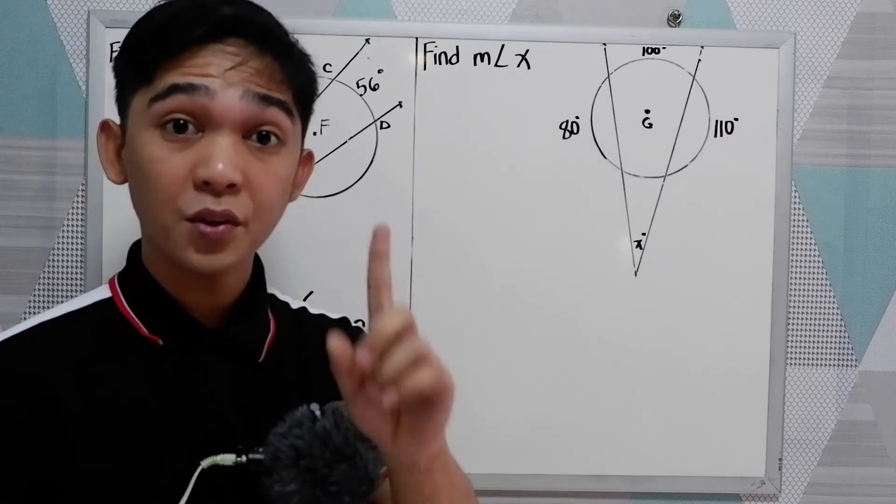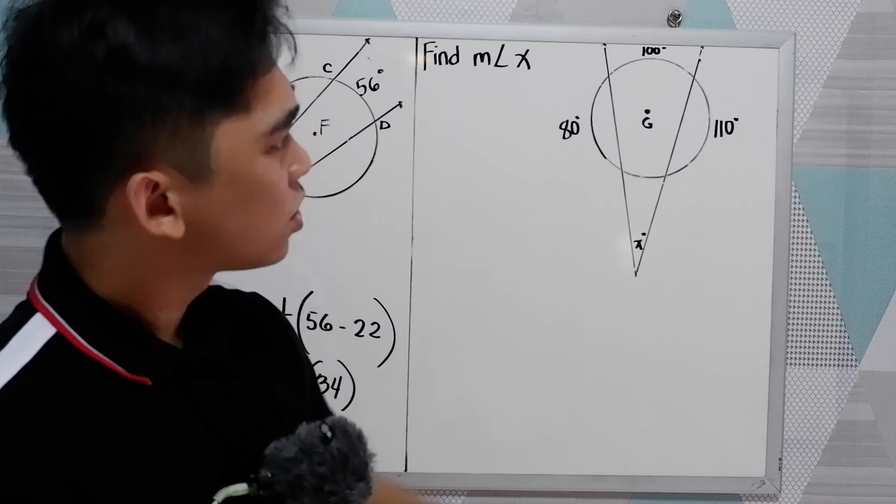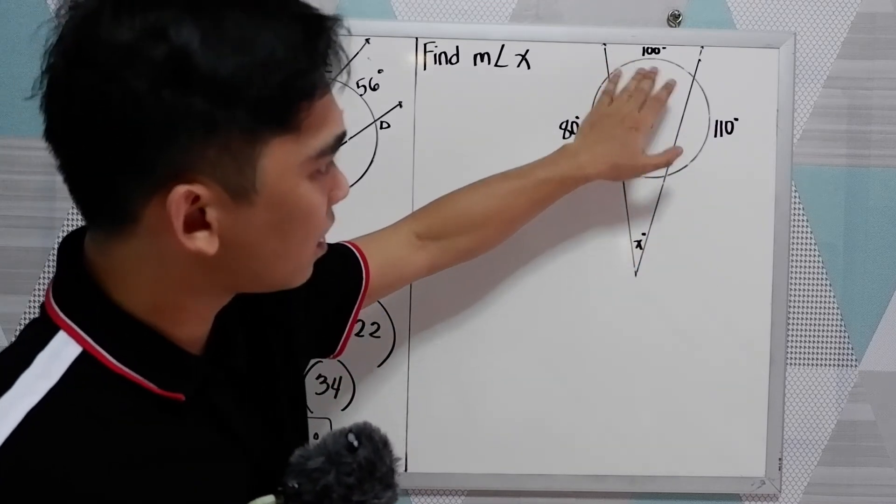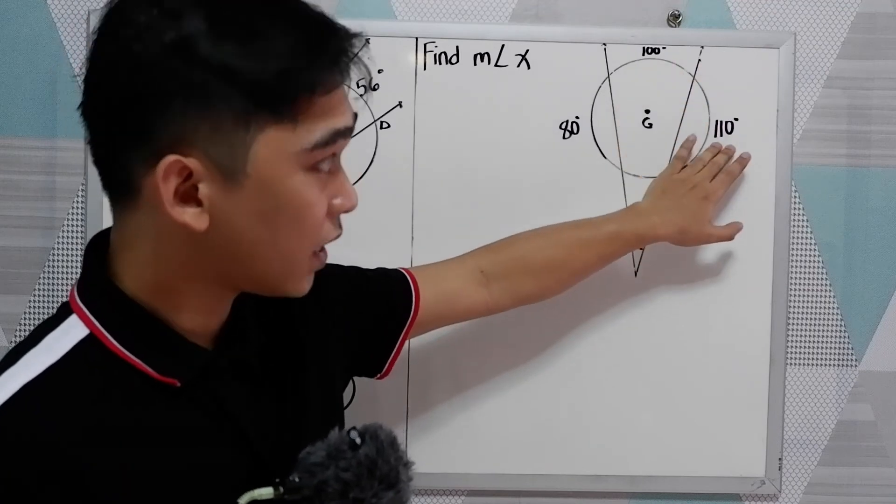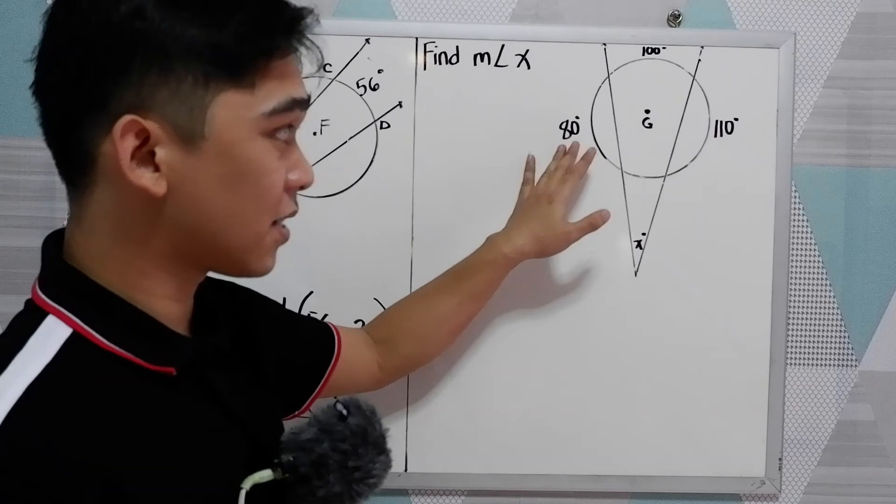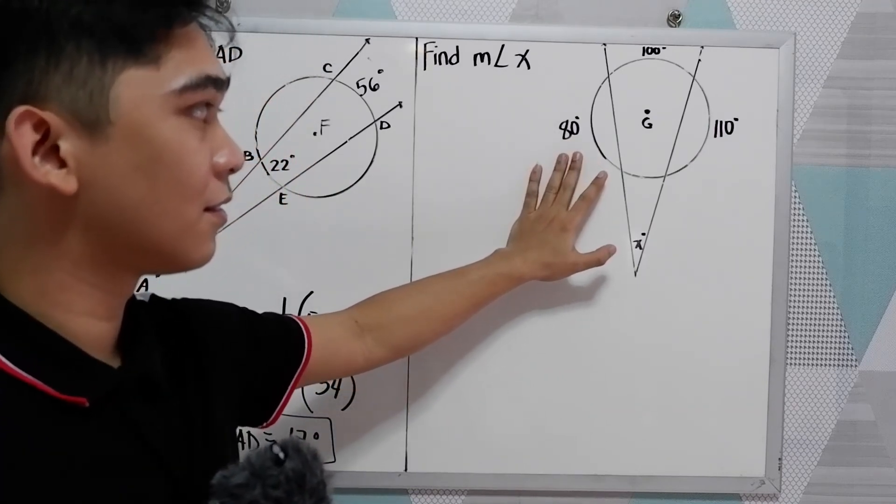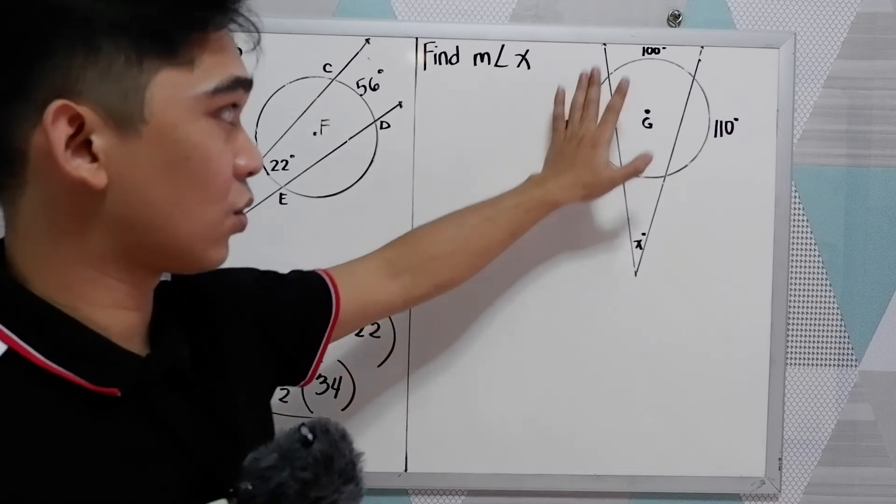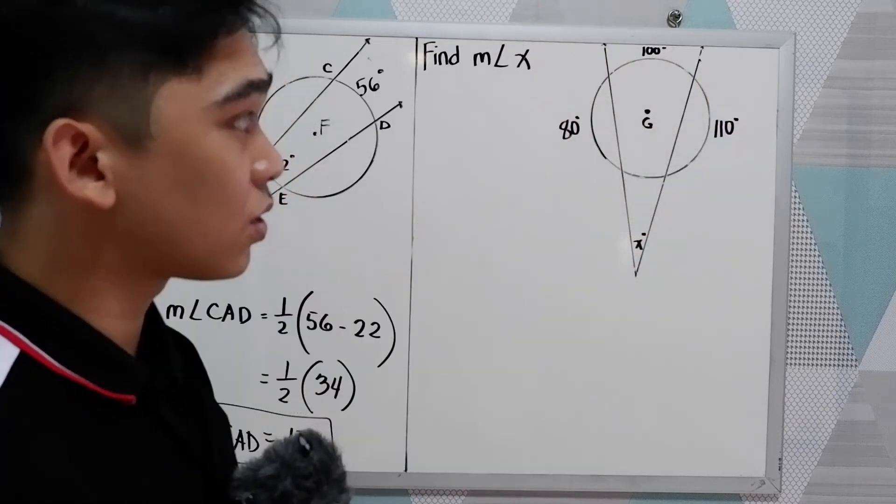We know that one revolution is equal to 360 degrees. So we have 100, 110. So 100 plus 110, that is 210. Plus 80, 290. So 360 minus 290, this will give us 70 degrees.